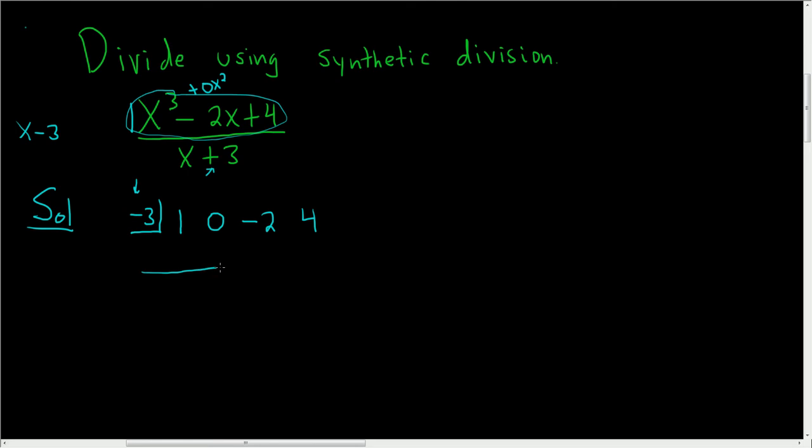Okay, then you draw a line. So to recap, first thing you do is you look here and you switch the sign, and then you write the coefficients down: 1, 0, negative 2, 4.